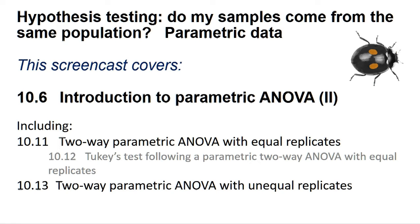Including section 10.11, two-way parametric ANOVA with equal replicates, section 10.12, Tukey's test following a parametric two-way ANOVA, and section 10.13, two-way parametric ANOVA with unequal replicates. This test asks how two categorical variables, termed factors, affect a single dependent variable, often called the response variable, in statistical packages.